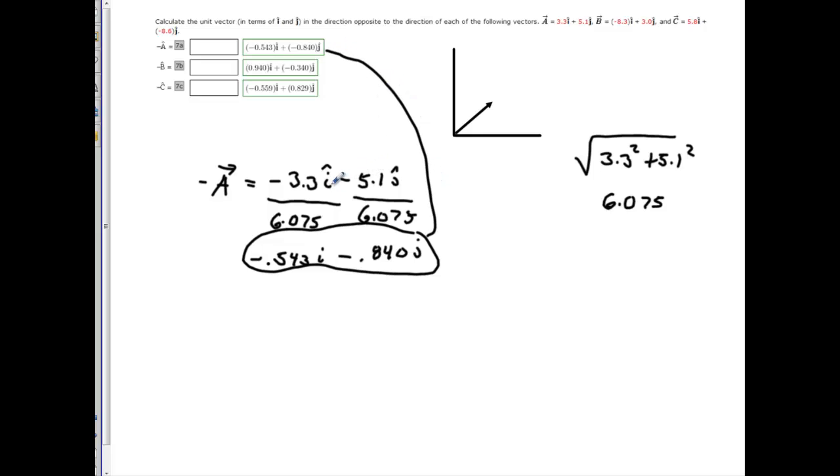So, again, all you have to do is make them negative and divide it by the magnitude of that vector. And that gives it a unit vector. That's not unit vector notation. That's unit vector form. Okay? Best of luck with these problems.